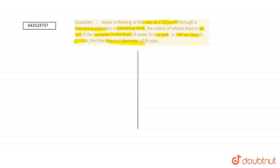So we have a cylindrical pipe and a cylindrical tank. Let us draw a figure for better understanding.